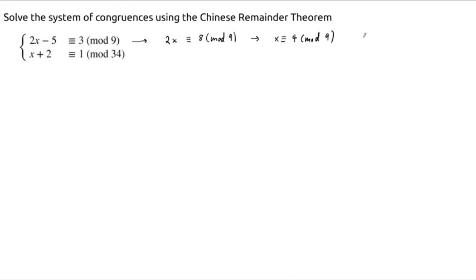At this point we can start making our table. Our a1 is equal to 4, our n1 is equal to 9. Remember, our job is to find y1, and we'll use Bezout's theorem to do that.